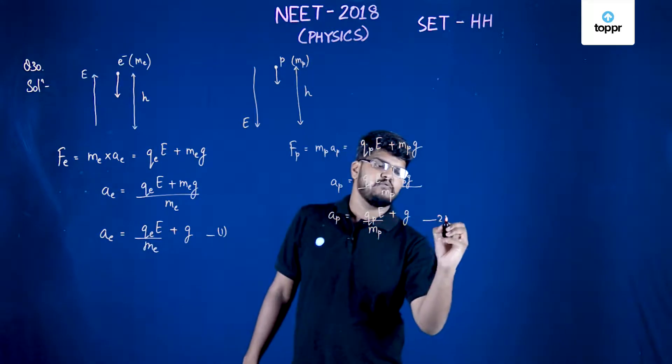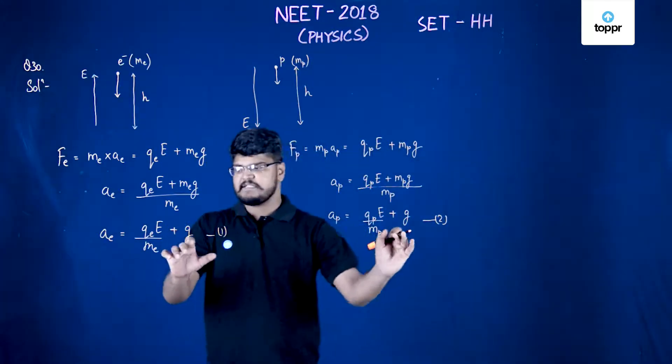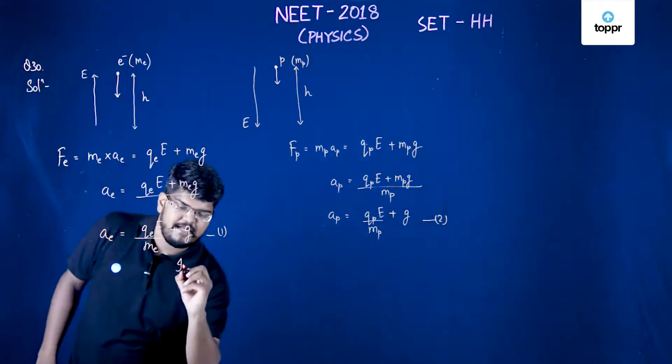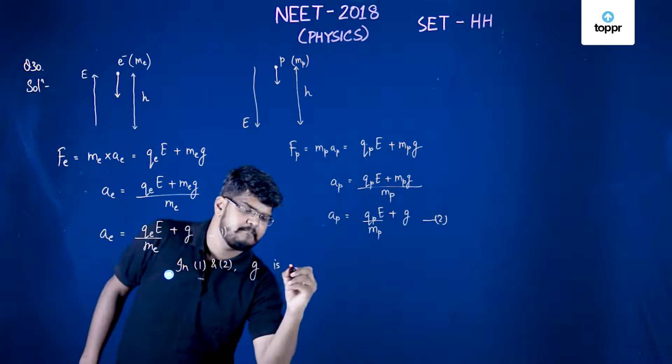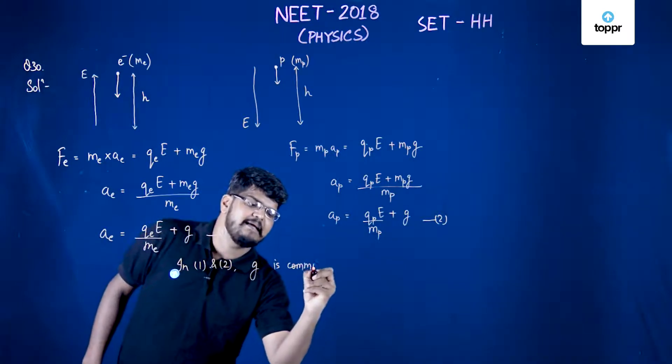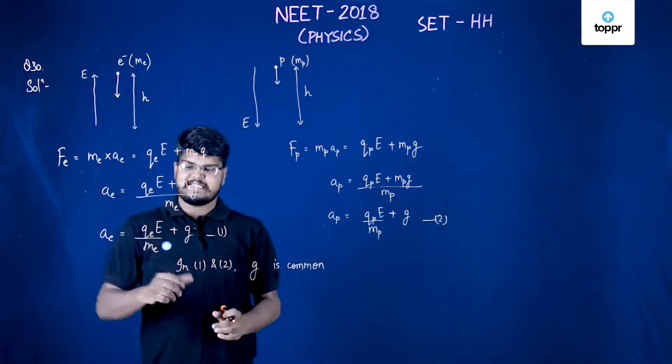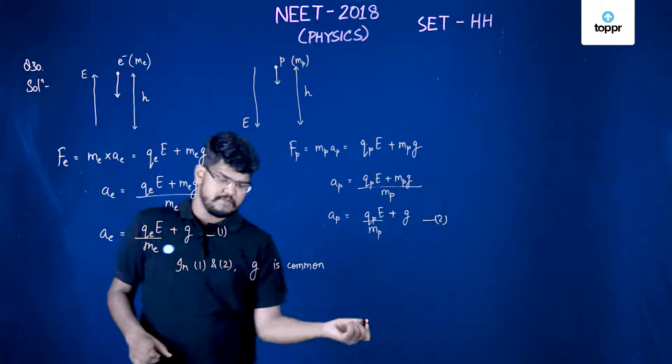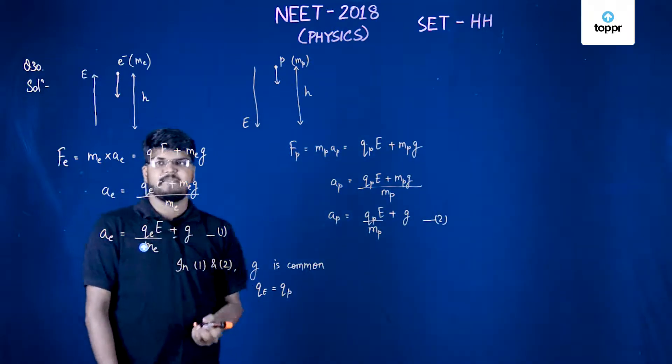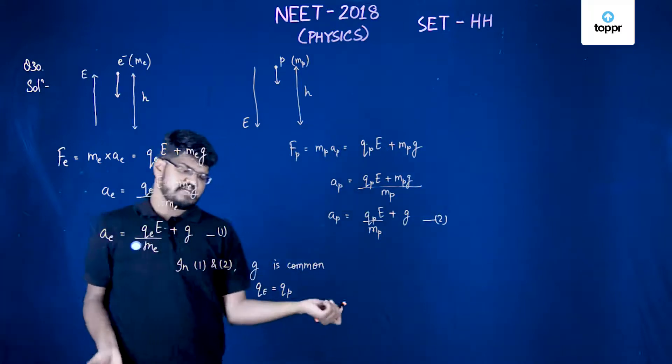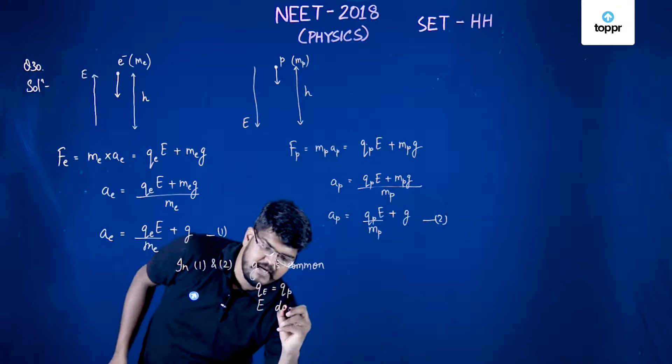Now if you compare equations 1 and 2, you can clearly see that G is constant in both. So G is common in 1 and 2—that doesn't help us decide which acceleration will be greater. We can also say that QE and QP are equal. Since both are of unit charge, the electric field is also equal. So the electric field doesn't matter either.